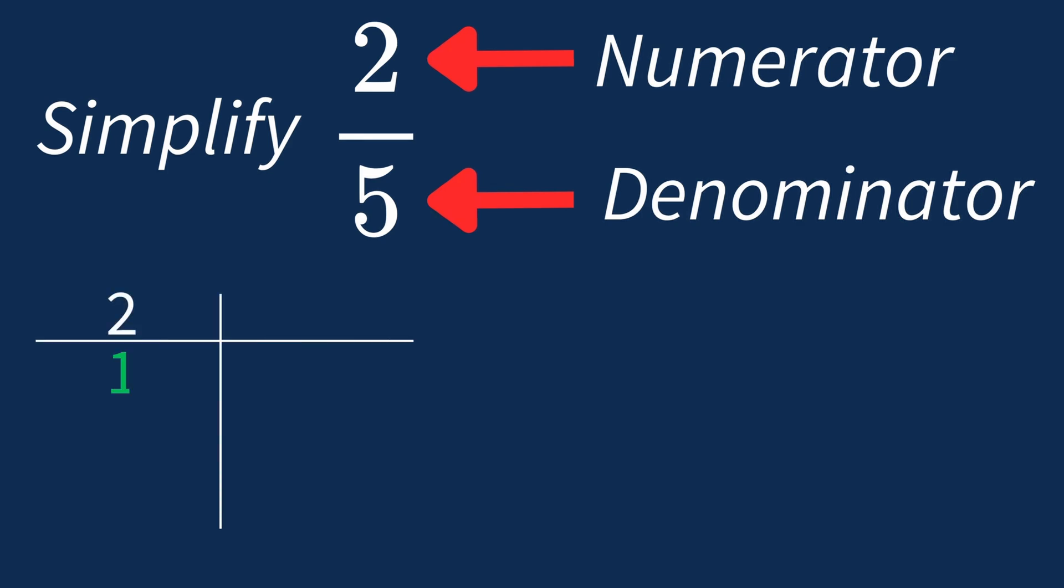For 2, the factors are 1 and 2. For 5, the factors are 1 and 5.